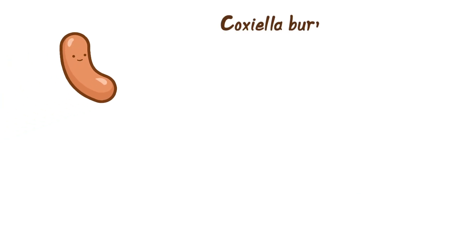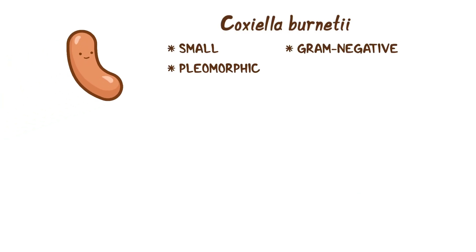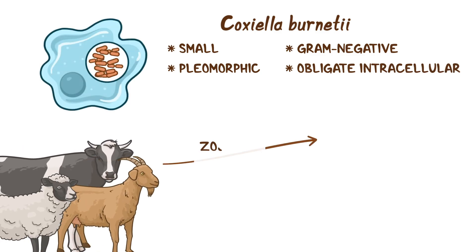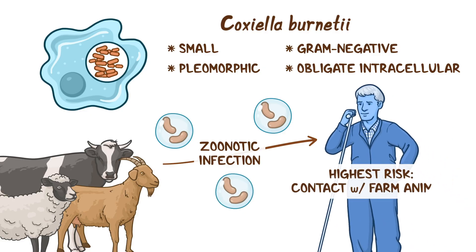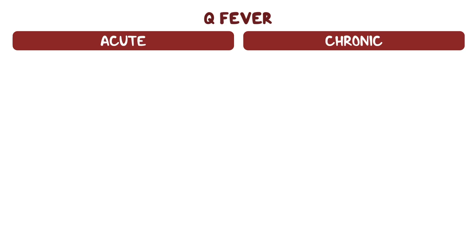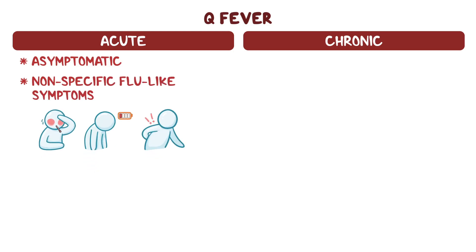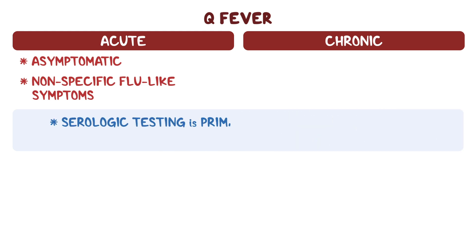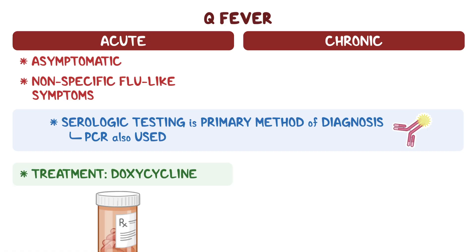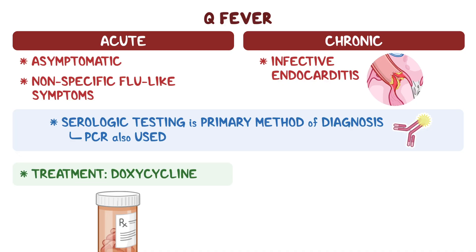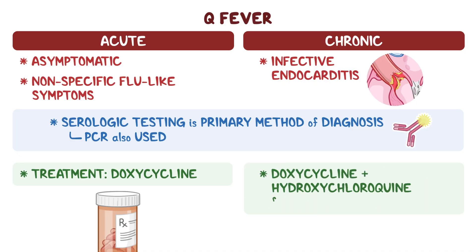As a quick recap: Coxiella burnetii is a small, pleomorphic, gram-negative rod that is an obligate intracellular bacterium. It causes a zoonotic infection transmitted primarily via aerosols, and people at highest risk are individuals in contact with farm animals. The primary condition it causes is Q fever, divided into acute and chronic forms. Acute Q fever can be asymptomatic or present with non-specific flu-like symptoms such as fever, fatigue, and muscle aches. Serologic testing is the primary method of diagnosis, with PCR also used in some cases. Treatment of acute Q fever involves a course of doxycycline, while chronic Q fever — most classically associated with infective endocarditis — requires doxycycline and hydroxychloroquine for at least 18 months.